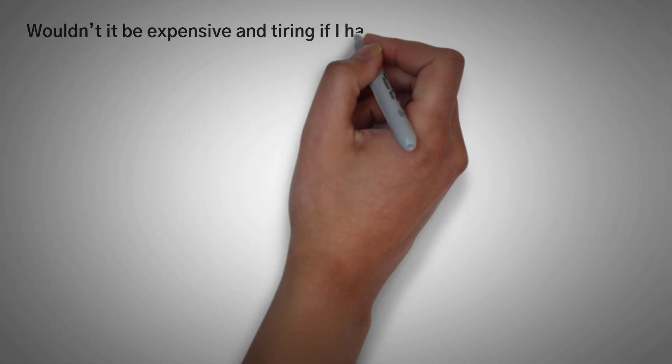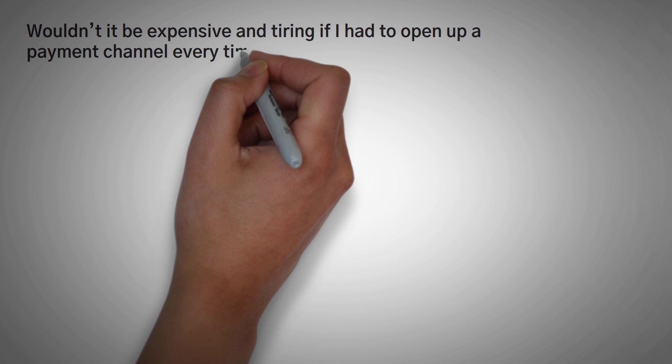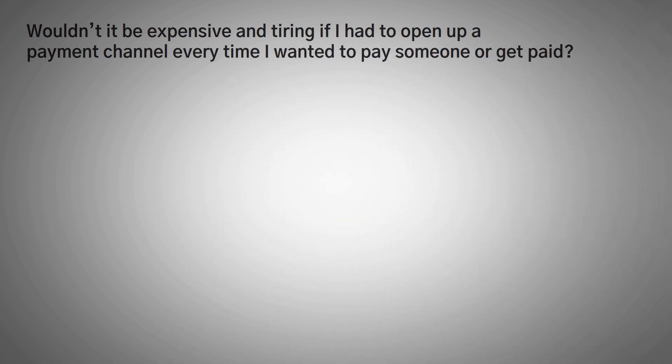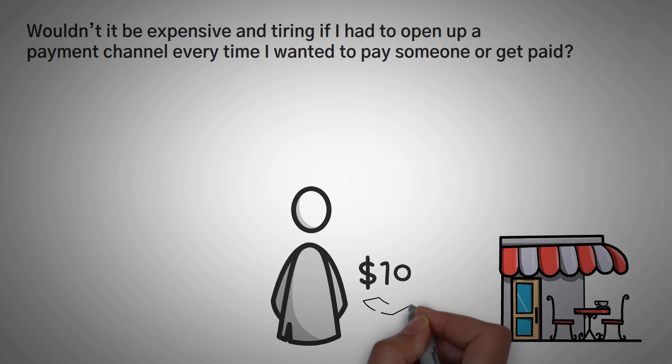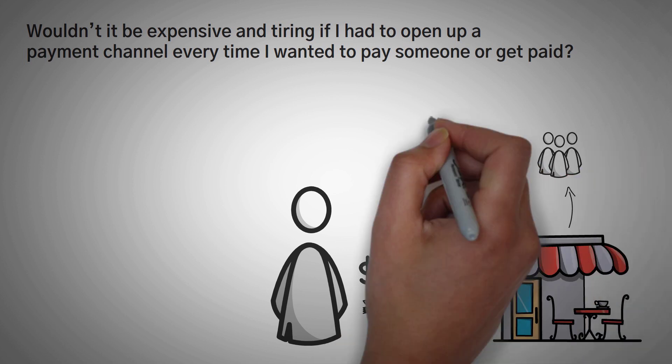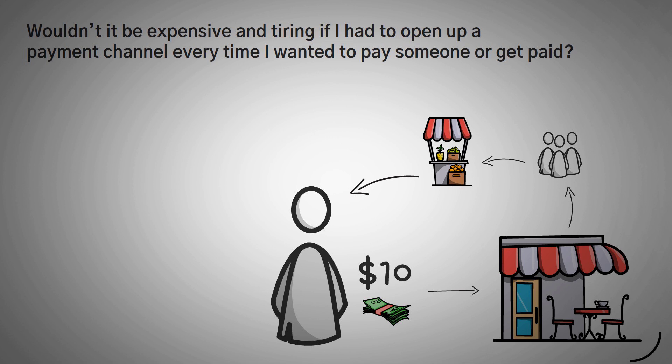Now, you might be wondering at this point, wouldn't it be expensive and tiring if I had to open up a whole bunch of payment channels every time I wanted to pay someone or get paid? Well, that's a good question. However, think back to our coffee shop example. What if all of that was off-chain and I basically just kept my $10 IOU instead of the money gathering fees going from me to the coffee shop to the worker to the grocery store and then back to me. I mean, essentially that $10 is where it was in the first place.